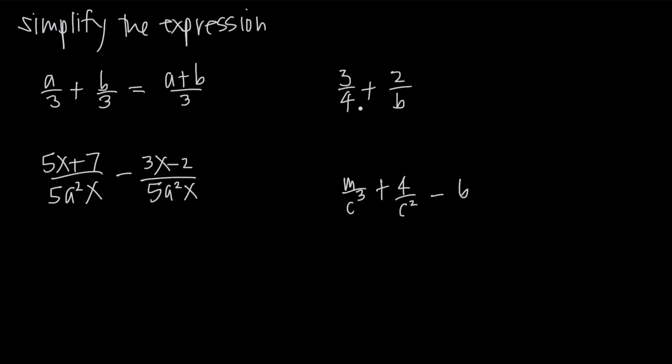What about something like 3/4 plus 2/b? Same thing here. We need a common denominator. One denominator is 4, the other one is b. So we're going to multiply this first fraction by b/b and multiply the second fraction by 4/4 because that'll give us a denominator of 4b in both fractions. So the result is 3b/4b plus 8/4b. Now we have a common denominator and can combine the fractions into one. So we'll get (3b+8)/4b.